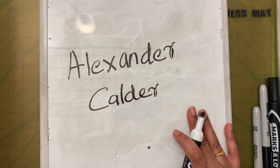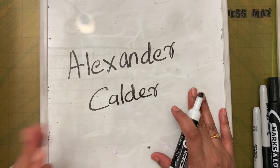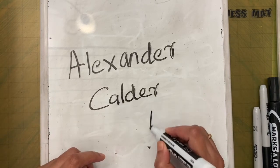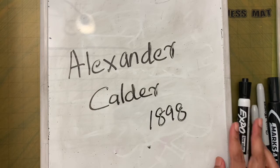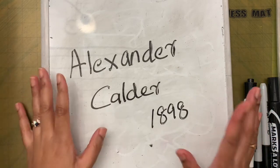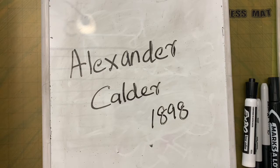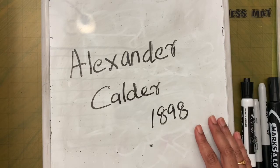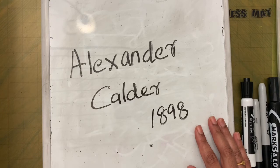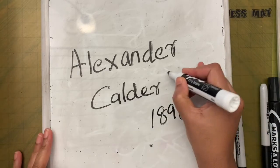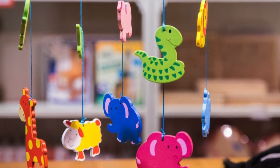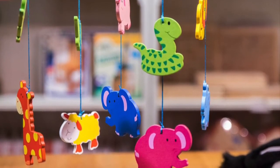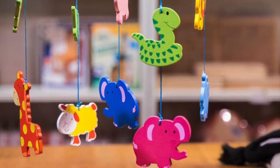Alexander Calder was born in Philadelphia - a place on the east coast - in 1898. Both of his parents were artists, and he became an artist too. He is famous for inventing mobiles - not the mobile phone, but mobiles like the hanging things you see above a baby's crib that move.